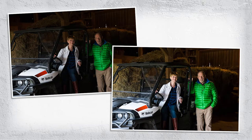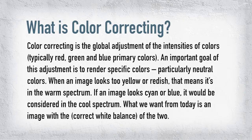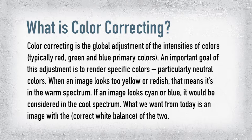Many of you may ask, what is color correcting? Color correcting is the global adjustment of the intensities of colors, typically red, green, and blue primary colors. An important goal of this adjustment is to render specific colors, particularly neutral colors. When an image looks too yellow or reddish, that means it's in the warm spectrum. If an image looks cyan or blue, it would be considered in the cool spectrum.